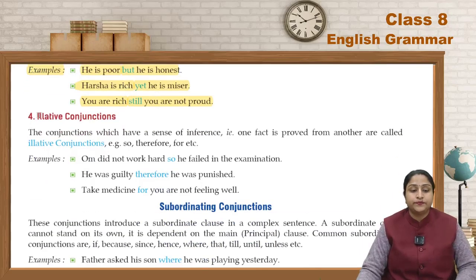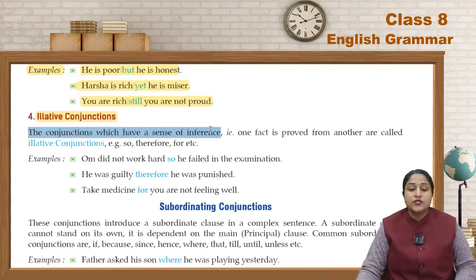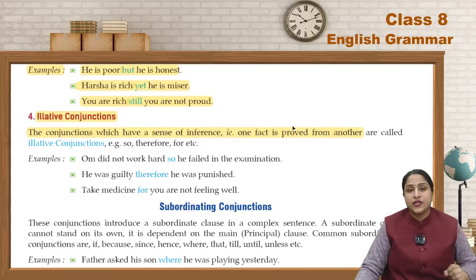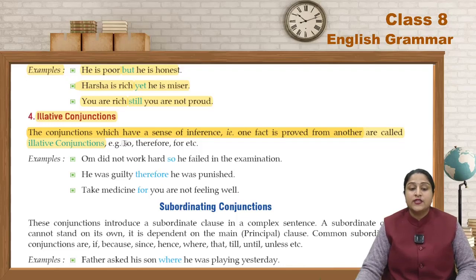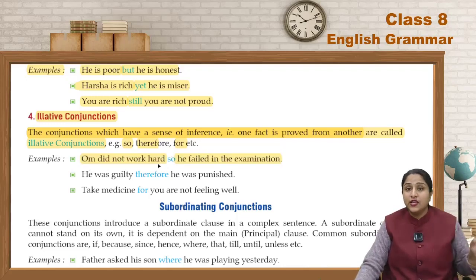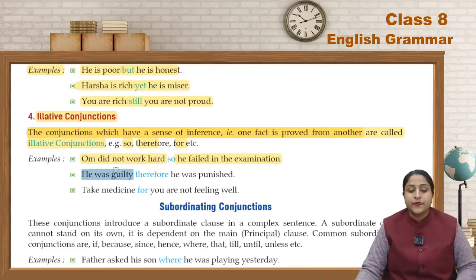Fourth are Illative Conjunctions — conjunctions which have a sense of inference, meaning one fact is proved by another fact. For these we use: so, therefore, for. Examples: 'He did not work hard, so he failed in the examination.' 'He was guilty, therefore he was punished.' 'Take medicine for you are not feeling well.' So one fact depends on another.